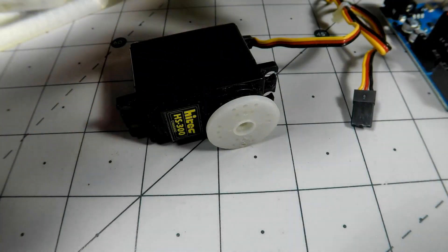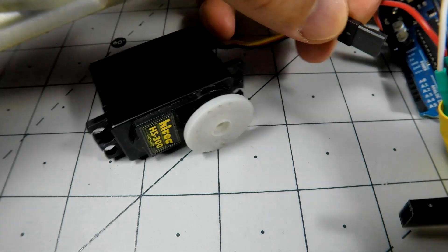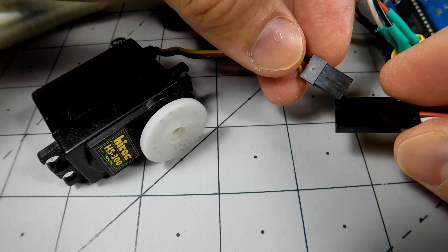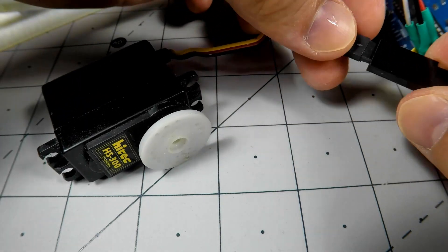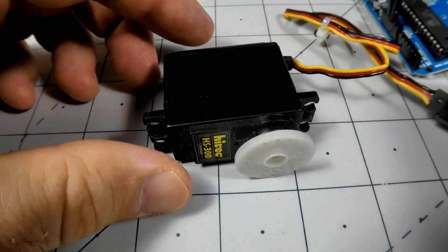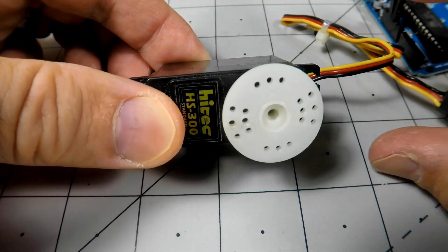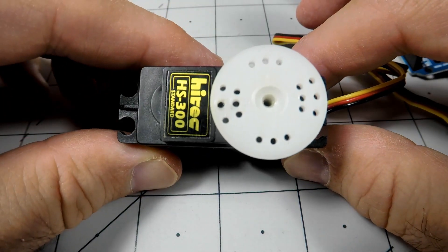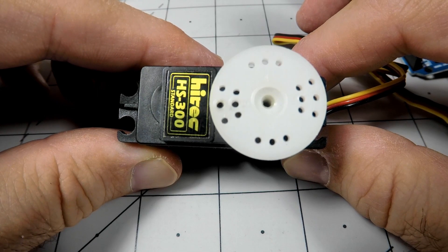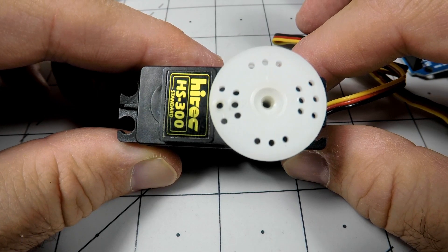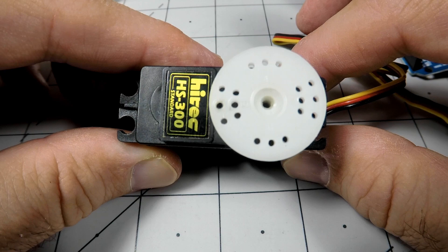And you can plug in a big servo, or a standard size servo. Looking pretty good. Just remember here, the black is still ground, red is 5 volts, and the yellow is the pulse width modulation signal from the Arduino.